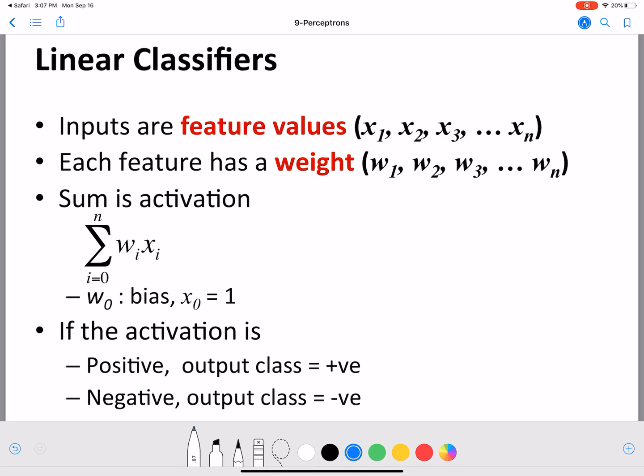Just going over linear classifiers again: our inputs are the values for the different features, and these are similar to what we saw in the naive Bayes example and the decision tree example. Outlook, temperature, wind conditions, those are the features. Sunny temperature is warm and wind is strong, those are the values of these features. Our inputs to this perceptron are going to be the values of these features.